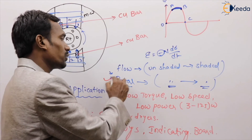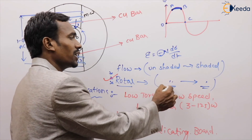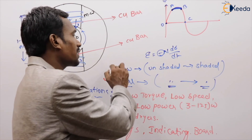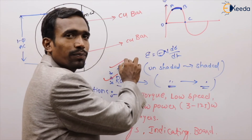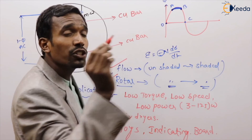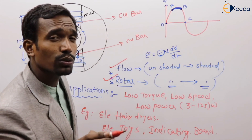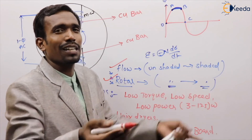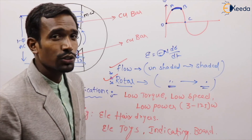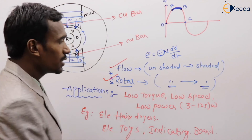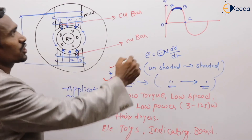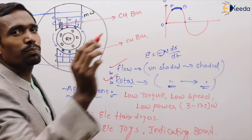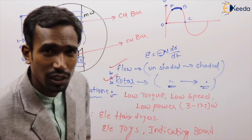The rotor rotates from the unshaded part to the shaded part of the main pole. Due to mutual induction, these are the applications. This is about the shaded pole induction motor.